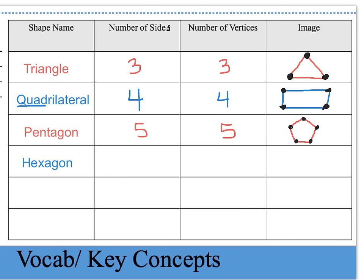Our next shape is called a hexagon, and a hexagon has six sides and six vertices. After drawing the six sides, the vertices are labeled with black dots. There are six vertices on a hexagon.